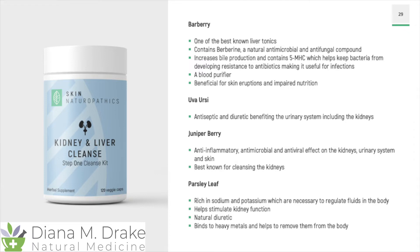Barberry is also a blood purifier, beneficial for skin eruptions and impaired nutrition. Uva ursi is an antiseptic and diuretic, benefiting the urinary system including the kidneys. Juniper berry is an anti-inflammatory, antimicrobial, and antiviral with this effect on the kidneys, the urinary system, and the skin — it's also best known for cleansing the kidneys. And finally in this formula, parsley leaf, which is rich in sodium and potassium necessary to regulate fluids in the body, helps stimulate kidney function, is a natural diuretic, and binds to heavy metals to help remove them from the body.